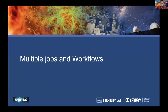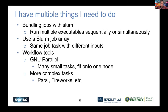You might also need to run a whole workflow of jobs — many executables either sequentially or simultaneously. Options include Slurm job arrays (same type of work with different inputs) and workflow tools we support at NERSC. The easiest to get started with is GNU Parallel, which fits many small tasks onto one node. Instead of requesting many small shared jobs, you request one large allocation and use GNU Parallel to run many tasks simultaneously. We also support more complex workflow tools, with documentation on our docs page, and help is available at help.nersc.gov.